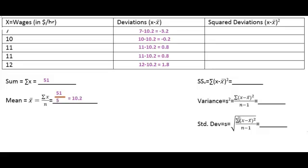The next step of our formula is to square each of these deviations. If we square these deviations, we're going to do negative 3.2 squared. Remember, negative 3.2 squared is really negative 3.2 times negative 3.2, and a negative times a negative is going to give you a positive. So be very careful when doing this on a calculator.